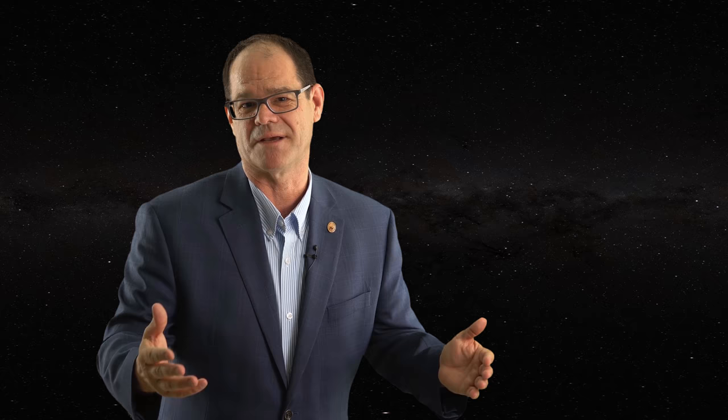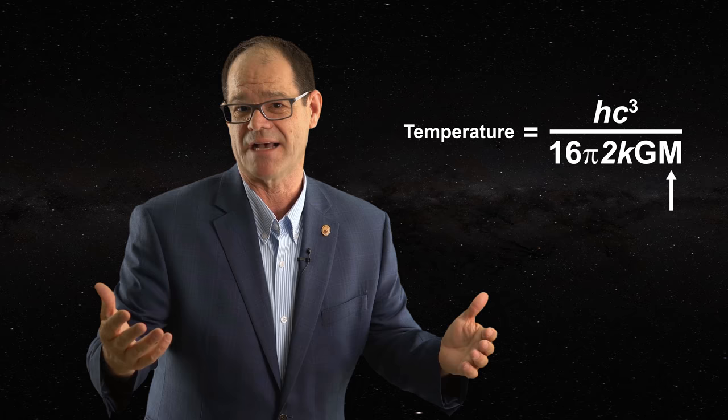Next, black hole thermodynamics. The Hawking temperature of a black hole is said to be inversely related to its mass. Since when did the temperature of an object, an intensive property, become related to its mass, an extensive property?